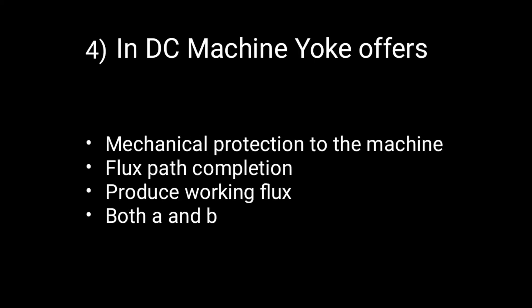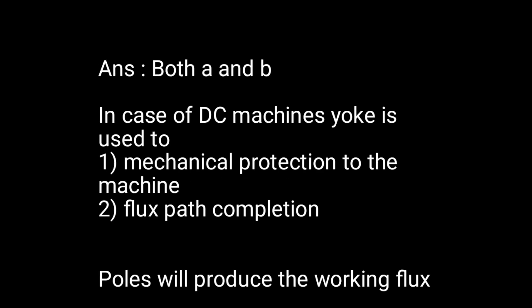Question 4: In a DC machine, the yoke offers — mechanical protection to the machine, flux path completion, produces working flux, or both A and B? The answer is both A and B. The yoke provides mechanical protection to the machine and also completes the flux path. Both field poles produce the working flux.